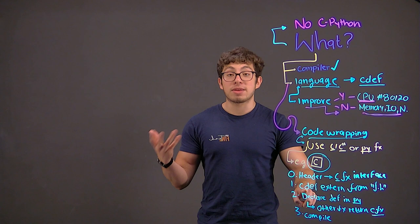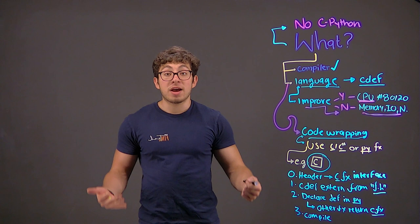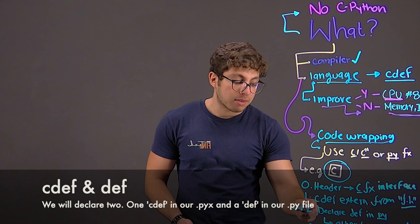Secondly, the first step after we've done that is to define in the Python code this statement. We use cdev extern from f.h. This is just basically calling the interface from the f.h file. This is our file, the header file from C.